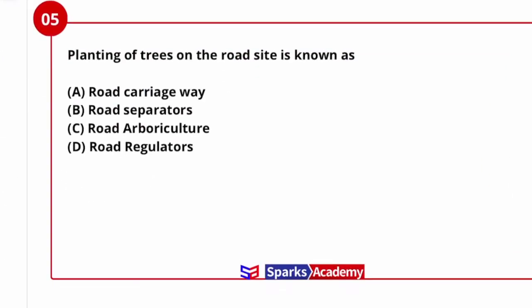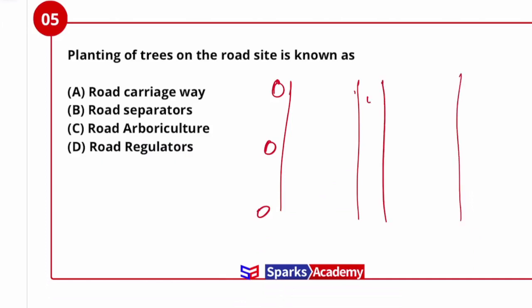Planting of trees on a roadside is known as? Trees can be placed on the median or sides of the road. The reasons include: reducing glare from opposite vehicle headlights into drivers' eyes, sound absorption, and aesthetic improvement. The correct answer is C.